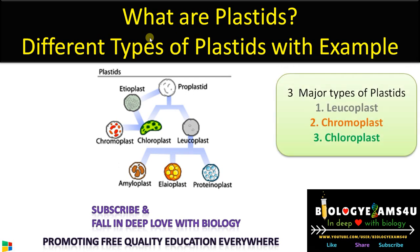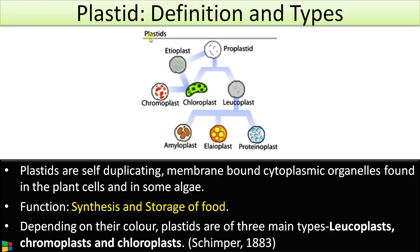Three major types of plastids are leukoplast, chromoplast, and chloroplast. Plastids are self-duplicating, membrane-bound cytoplasmic organelles found in plants and in some algae. Their functions include synthesis and storage — synthesis in the case of chloroplast, whereas storage in the case of leukoplast and other plastids.